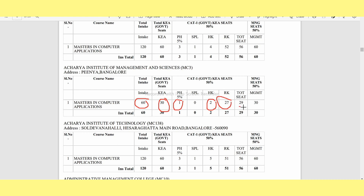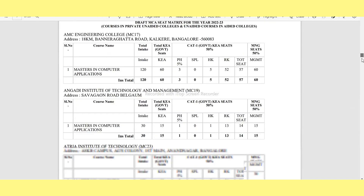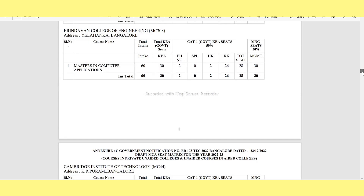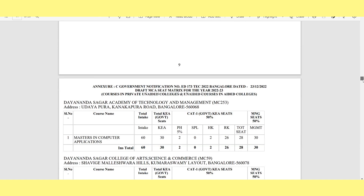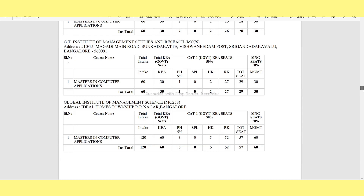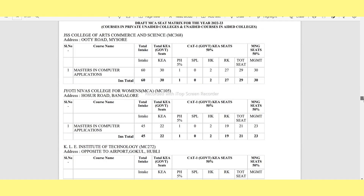The total seats are 29 and management seats are 50. The government seats are 30 and management seats are 30. This is important for students — if you are a student, you can register for college. After registration, you can enroll in the program.